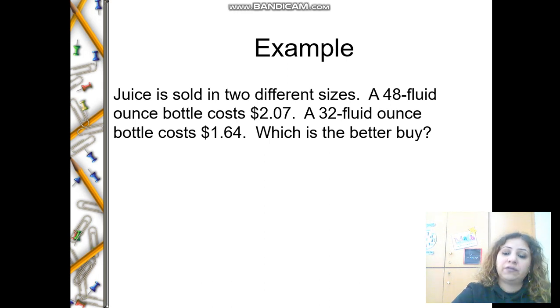First, you need to find the unit rate. Let's write the ratios: $2.07 divided by 48, and the other ratio is going to be $1.64 over 32.